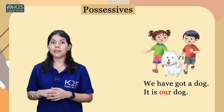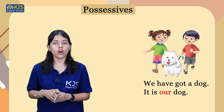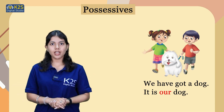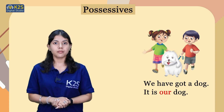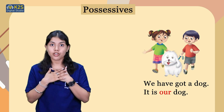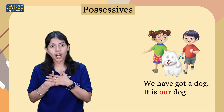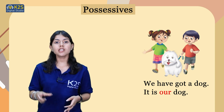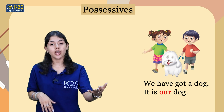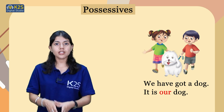In the fourth example you can see that there are two children who are having a dog. So instead of using 'he' or 'she' we will use 'we'. The sentences are: We have got a dog. It is our dog. The possessive is 'our' because this word shows the connection between the children and their dog.